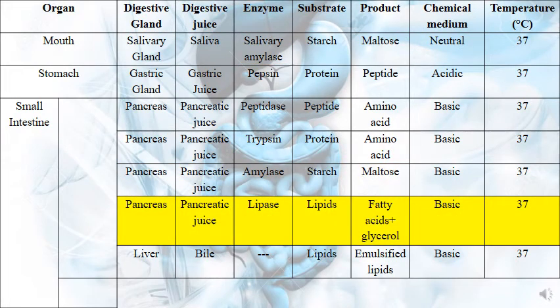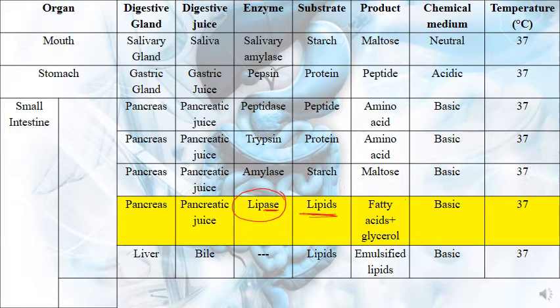The pancreas, at the level of the small intestine, secretes pancreatic juice containing another enzyme called lipase. Lipase works on lipids to give fatty acids and glycerol. The medium is basic and the temperature is 37 degrees Celsius. Notice how enzyme names reflect their substrates: lipase works on lipids, peptidase works on peptides.